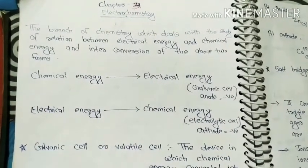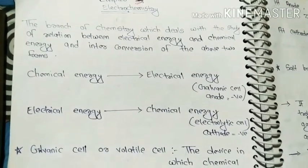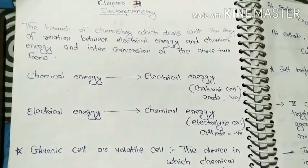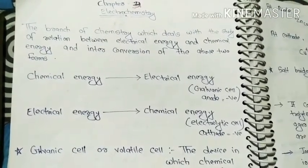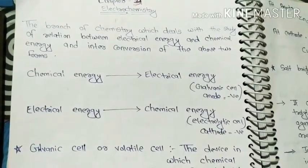Today's class will remain in Electrochemistry and it is a very interesting class. Electrochemistry, what do we understand? The branch of chemistry which deals with the study of relation between electrical energy and chemical energy, and inter-conversion of the above two forms. Chemical energy to electrical energy conversion.